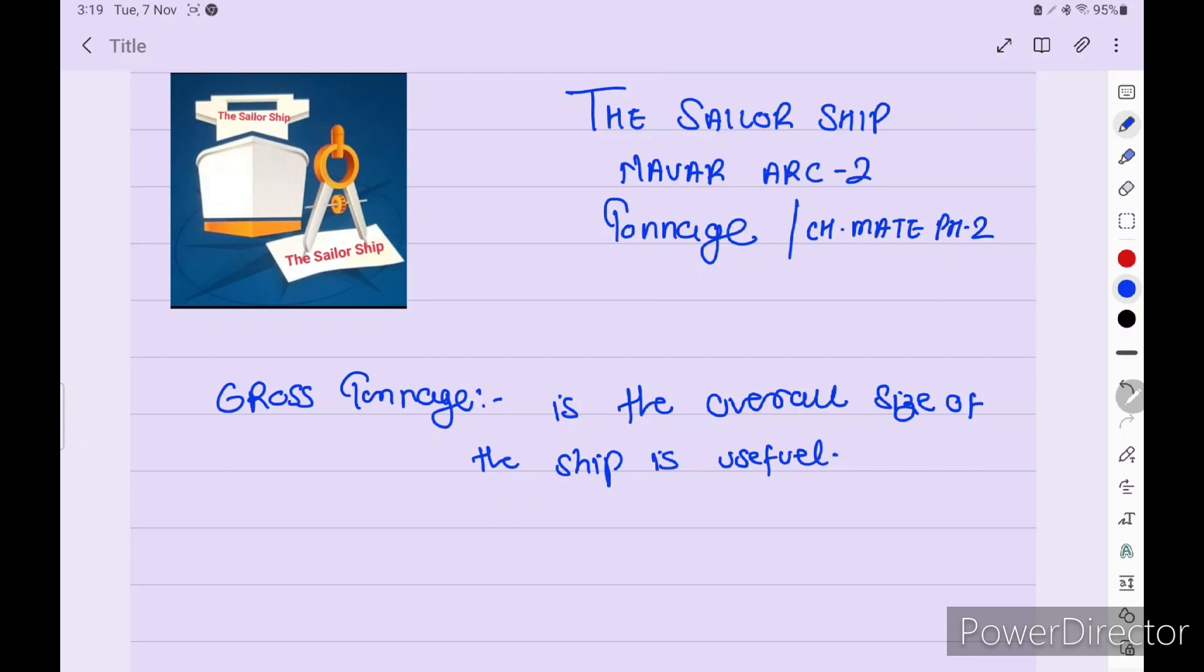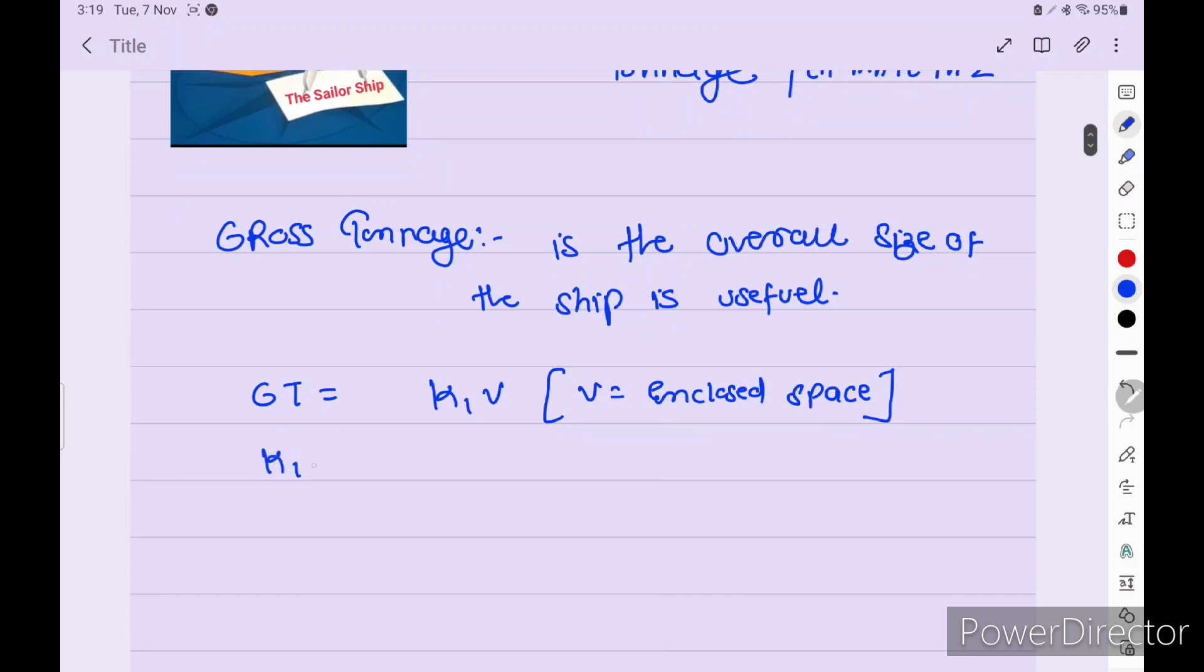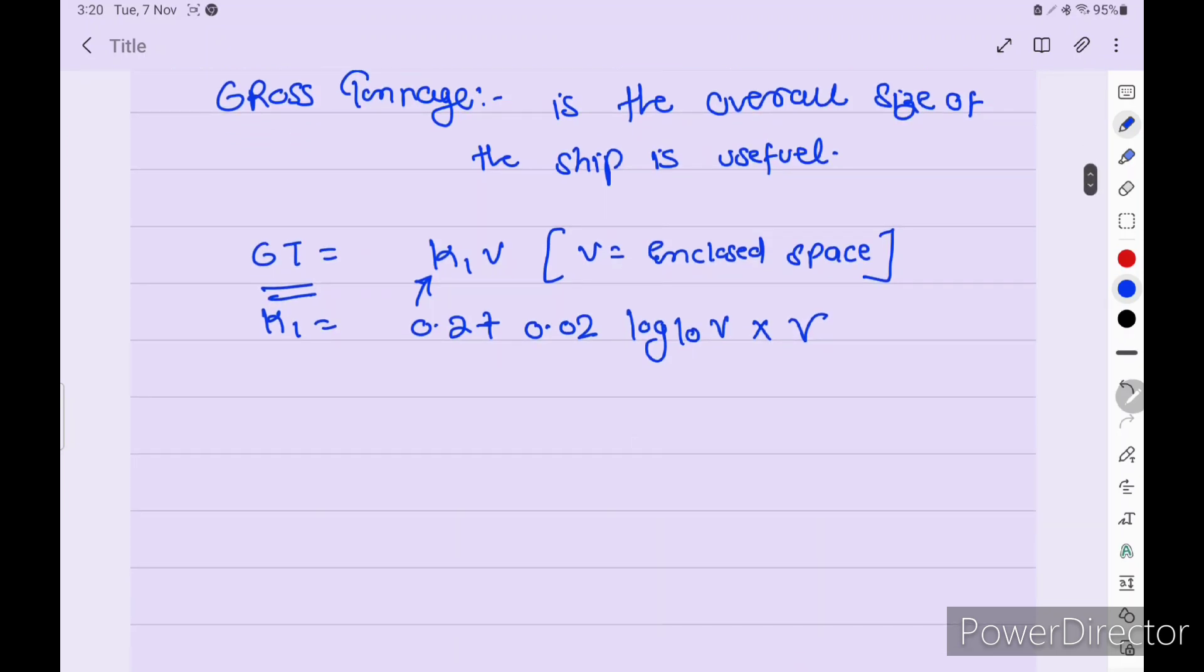The formula of gross tonnage is equal to k1 into V, where V is enclosed space. All enclosed space comes into V. The value of k1 is equal to 0.2 plus 0.02 log base 10 of V. So this is the formula of k1 times V total enclosed space, so we get the gross tonnage.